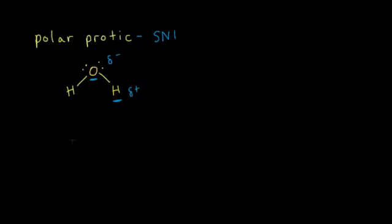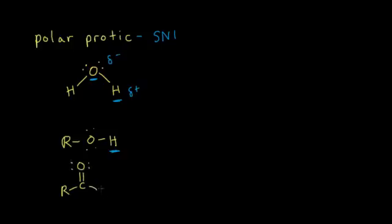If we took off one of these hydrogens and put an alkyl group on there, so now we had ROH, we would have an alcohol. Alcohols are also classified as polar protic solvents. This proton is attached to an electronegative atom, so alcohols can donate protons if the situation is right. Another example would be a carboxylic acid — we have a proton bonded to an electronegative atom, so that proton could be donated in solution. These are your three main polar protic solvents, and they favor SN1 reactions.